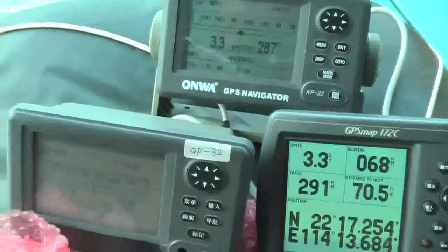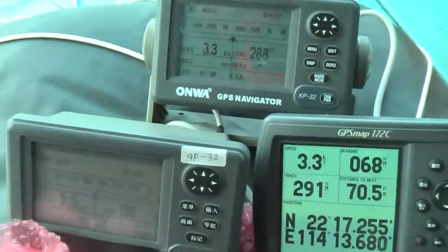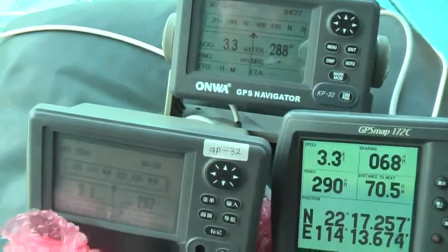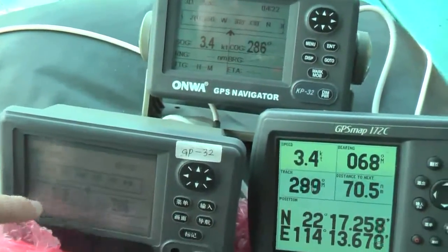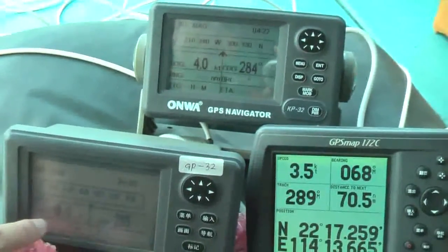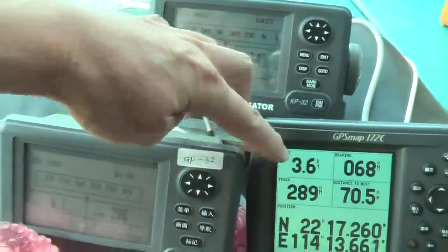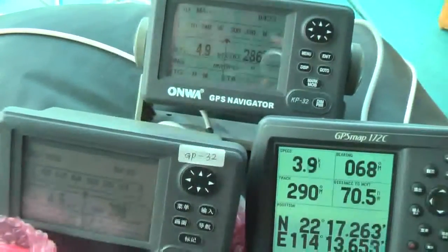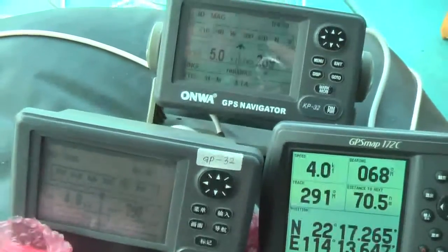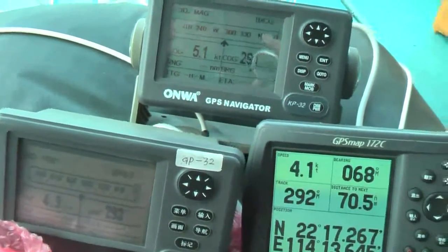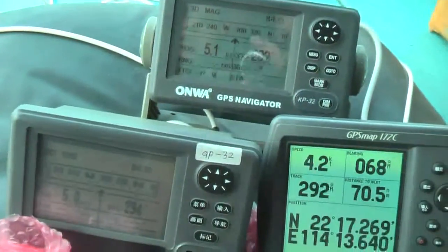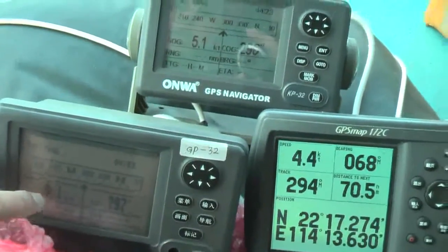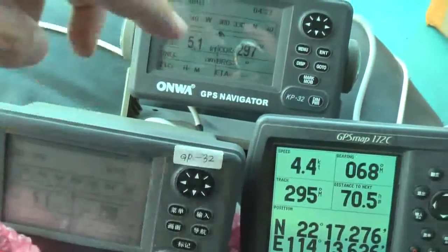Now we increase the speed. You can see the speed is going up, the speed is going up, and the speed is going up slowly. In the going up, we can see the KP-32 can catch up more quickly than the GP-32 and also the GAMI.